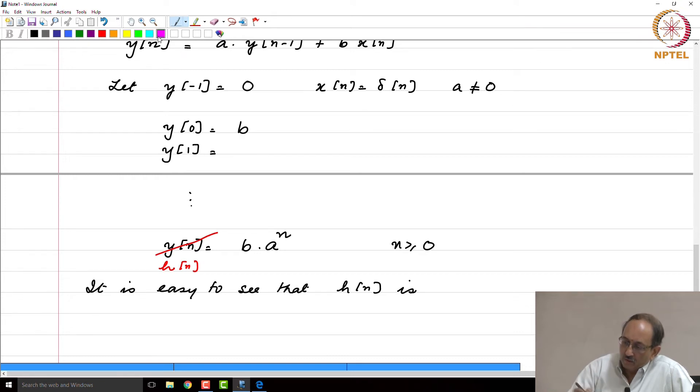This is indeed IIR because B*Aⁿ is of infinite duration. At no point does this become strictly 0. You should not look at it from the point of it decaying. For example, if mod A were less than 1 it will decay quickly and beyond a certain point reach a level that is practically 0. That is not the kind of classification we are after. We are looking at it from a theoretical point of view. This is clearly an exponential that lasts forever for n ≥ 0 and hence this is IIR.